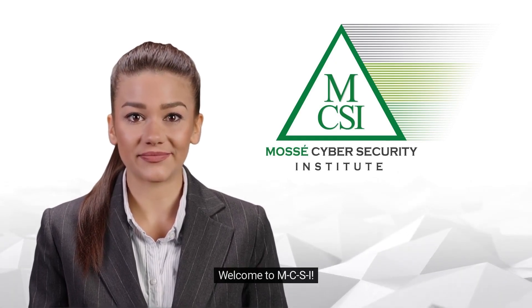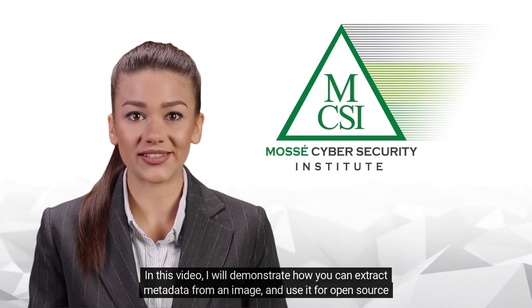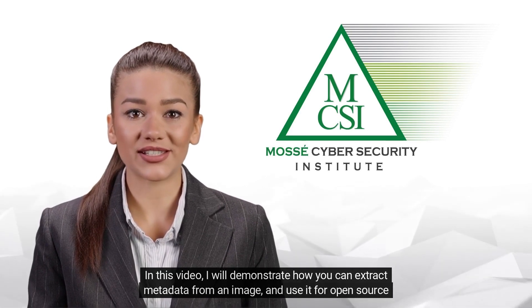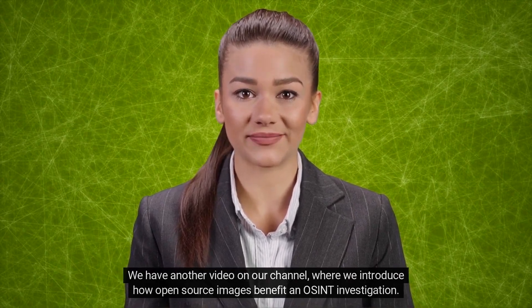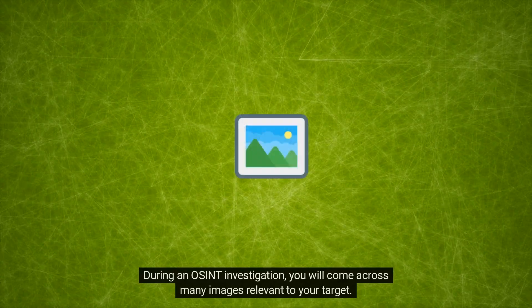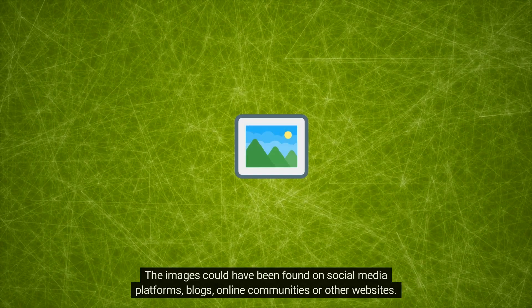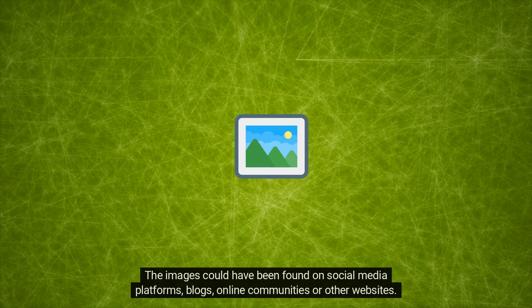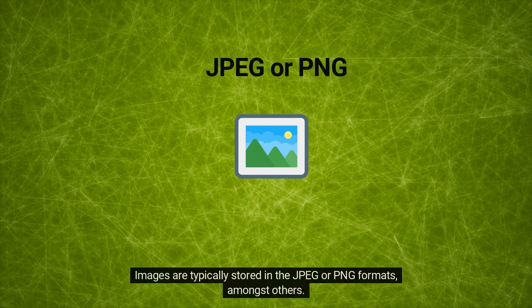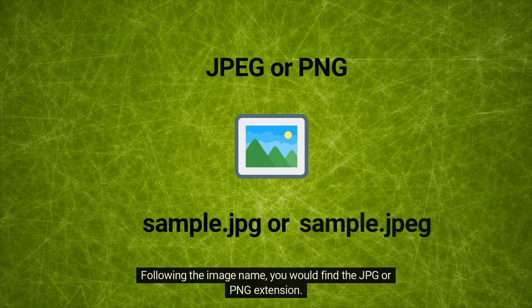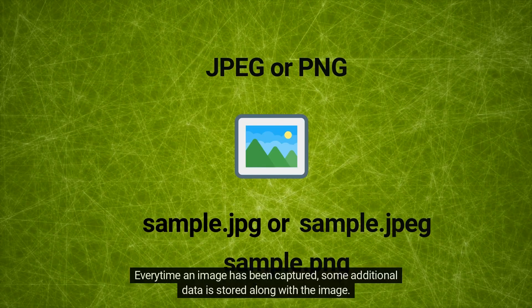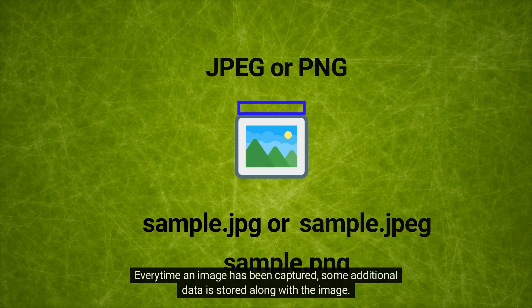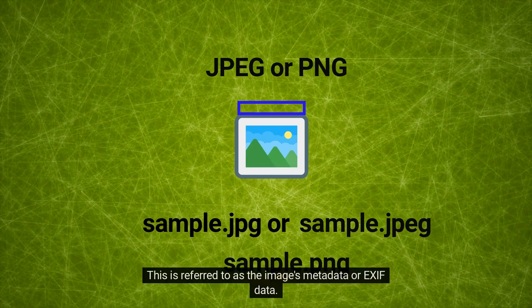Hi there, welcome to MCSI. My name is Emma. In this video I will demonstrate how you can extract metadata from an image and use it for open source intelligence. We have another video on our channel where we introduce how open source images benefit an OSINT investigation — the description box contains the link to it. During an OSINT investigation, you will come across many images relevant to your target. The images could have been found on social media platforms, blogs, online communities, or other websites. Images are typically stored in the JPEG or PNG formats, amongst others. An image sometimes has more information than what meets the eye — every time an image has been captured, some additional data is stored along with it. This is referred to as the image's metadata or EXIF data.